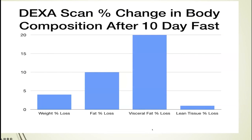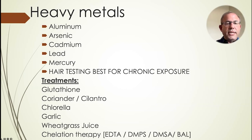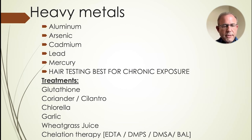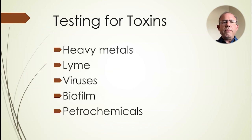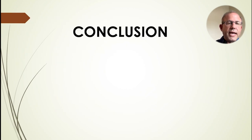I'm a huge fan of fasting, and also of exercise — just don't do them at the same time. For heavy metals like mercury and lead, you can use hair testing and other tests, and treat with glutathione, cilantro, chlorella, garlic, wheatgrass juice, and chelation orally or intravenously. I encourage you to get testing for toxins, heavy metals, Lyme disease if symptomatic, and viruses. There's even a blood test for biofilm, though your conventional doctor may not know what that means.